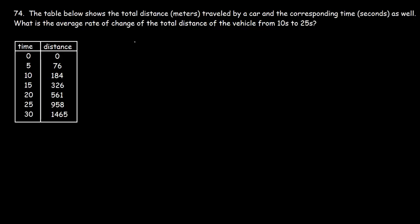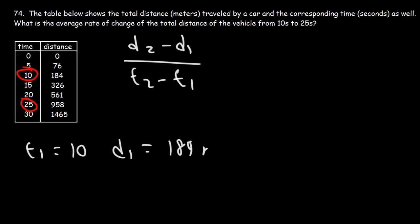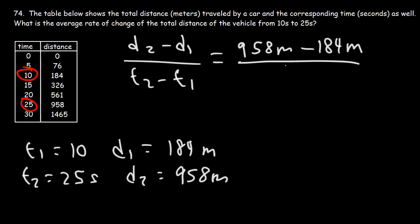So the average rate of change is going to be the distance or the change in distance divided by the change in time. So we want to find the answer from 10 seconds to 25 seconds. So T1 is going to be 10. D1, the distance that corresponds to that time, is 184. T2 is 25 seconds. D2 is going to be 958 meters. So let's plug in what we have. Let's replace D2 with 958, D1 with 184, T2 with 25, and T1 with 10.